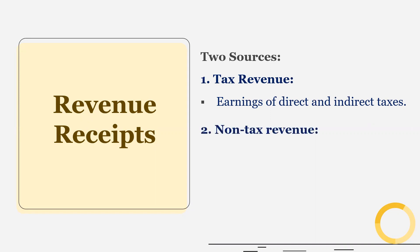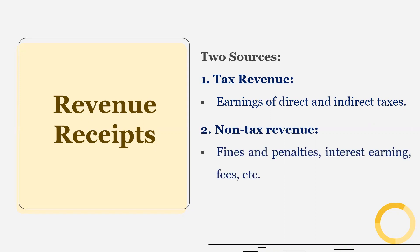Similarly, non-tax revenue — such as fines and penalties, interest earnings, and fees — neither creates liability nor reduces the assets of the government. Therefore, tax and non-tax revenue are both under the category of revenue receipts.